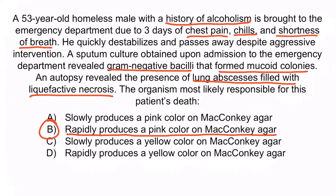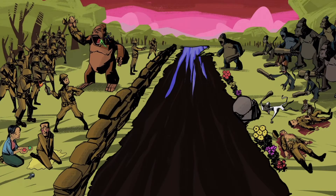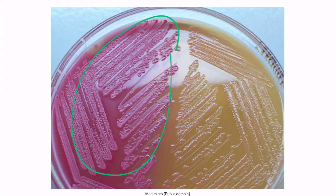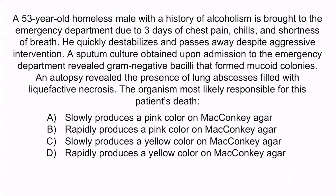In other words, Klebsiella is a fast lactose fermenter. From the image, recall that the white monkey running very fast is here to help you remember that Klebsiella is a fast lactose fermenter on MacConkey agar. The pink color on MacConkey agar indicates that the organism is a lactose fermenter. Klebsiella ferments lactose relatively rapidly, causing the agar to turn pink faster than other organisms such as Serratia or Citrobacter, which are slow lactose fermenters. Answer A is wrong because Klebsiella is a fast, not slow, lactose fermenter. C and D are wrong because Klebsiella produces a pink color, not a yellow color, on MacConkey agar. So again, the correct answer is B — rapidly produces a pink color on MacConkey agar.